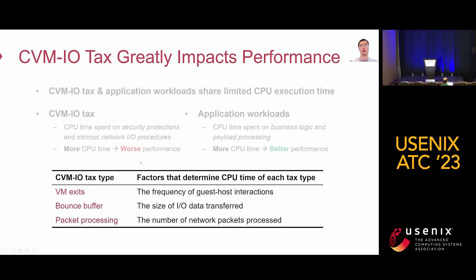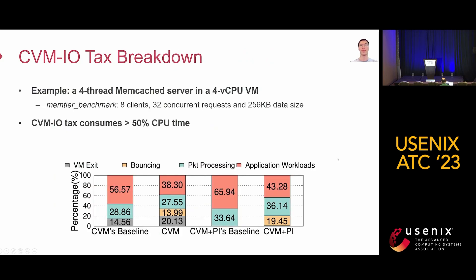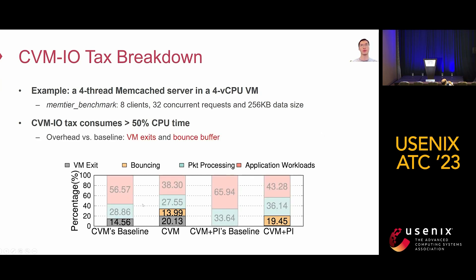We classify the CVM IO tax into three types. First is the VM exit tax, which is determined by the frequency of guest-host interactions. Second is the bounce buffer tax, which is determined by the size of I/O data transfer. Third is the packet processing tax, whose CPU consumption is determined by the number of packets to be processed. We then break down the CVM IO tax using memcached as an example. The results show that the CVM IO tax consumes more than half of CPU time in CVMs. Compared to the baseline, the overhead mainly comes from the VM exit tax and the bounce buffer tax. Besides, packet processing tax also consumes a large portion of CPU time.